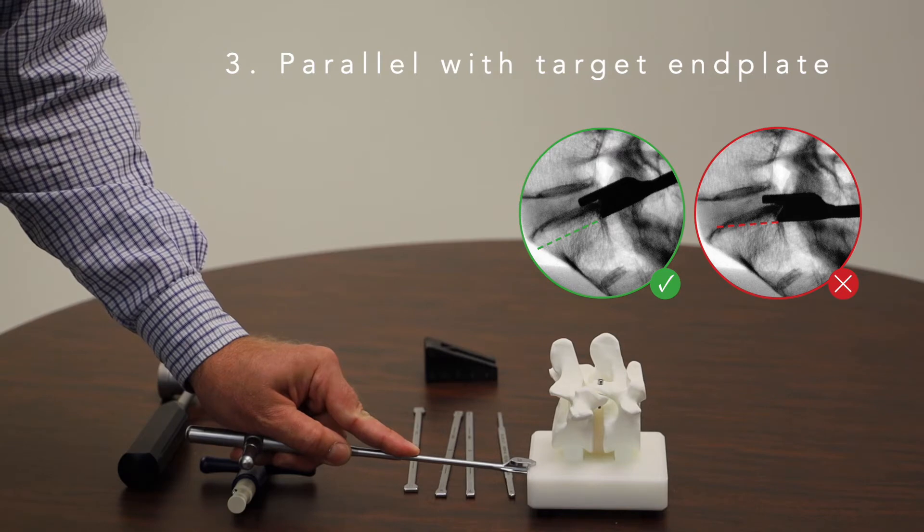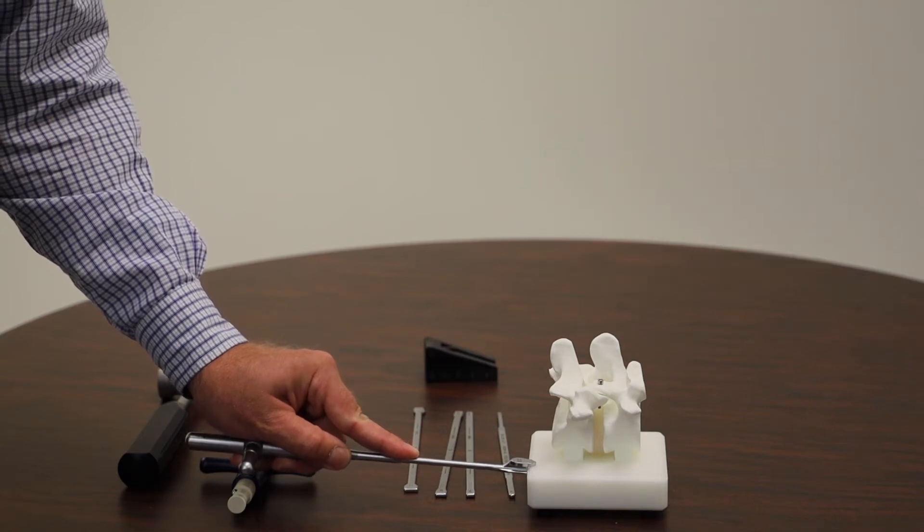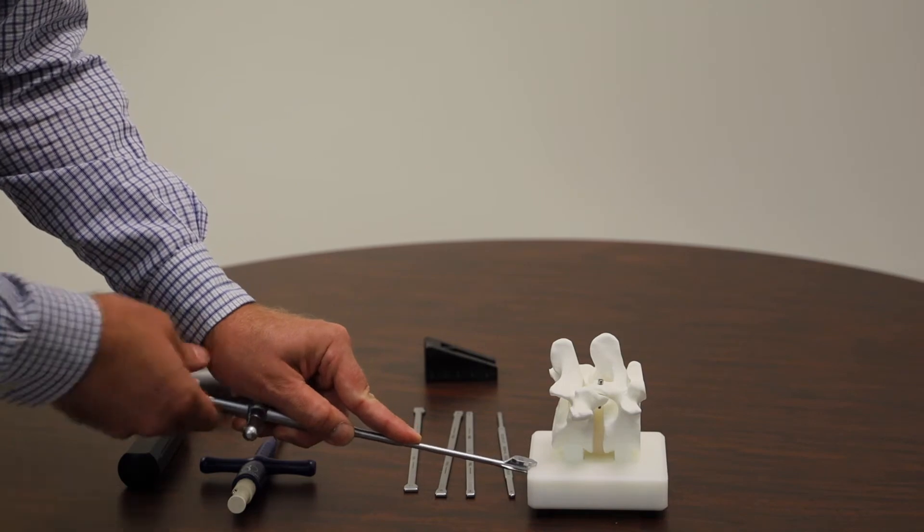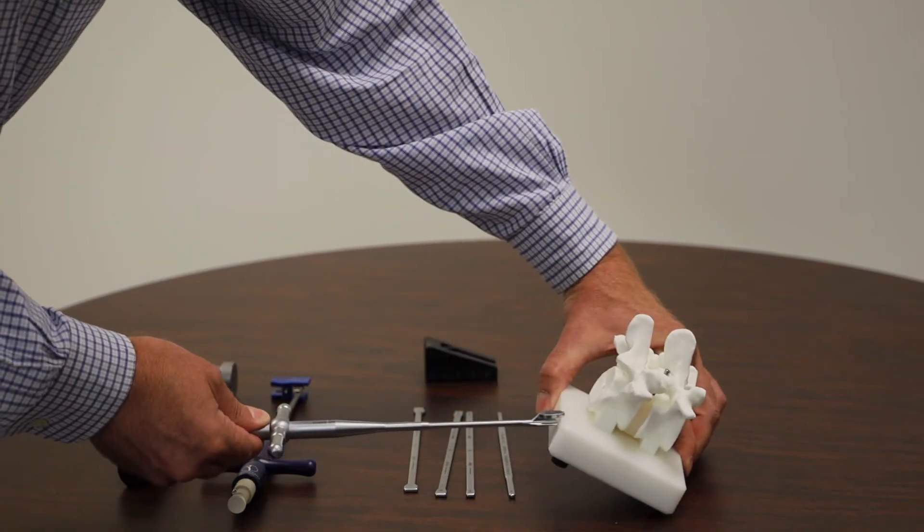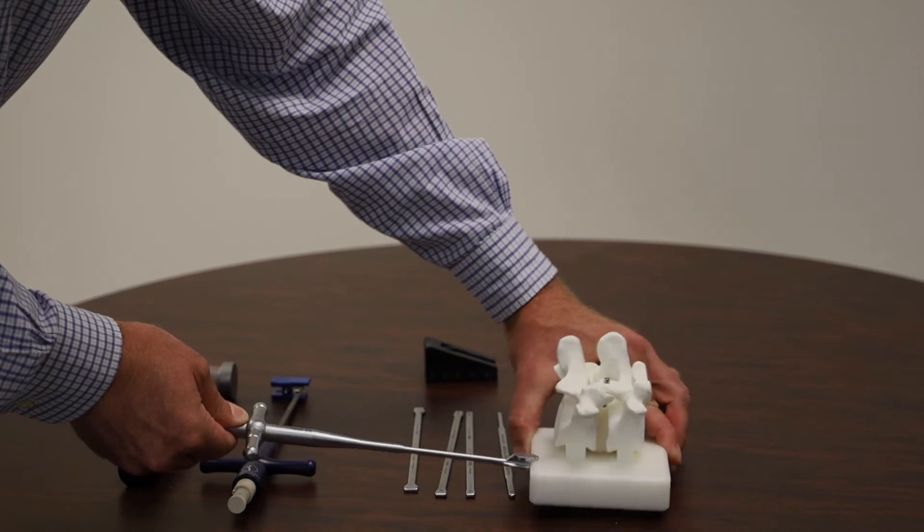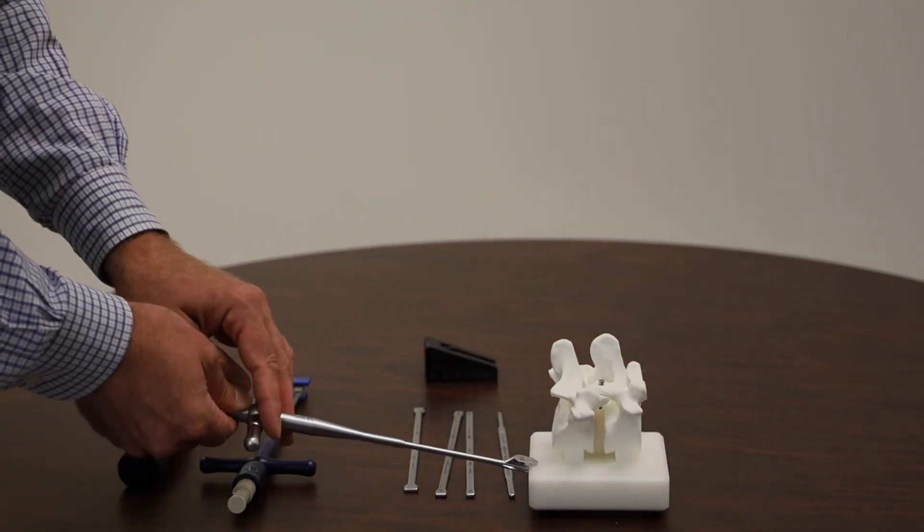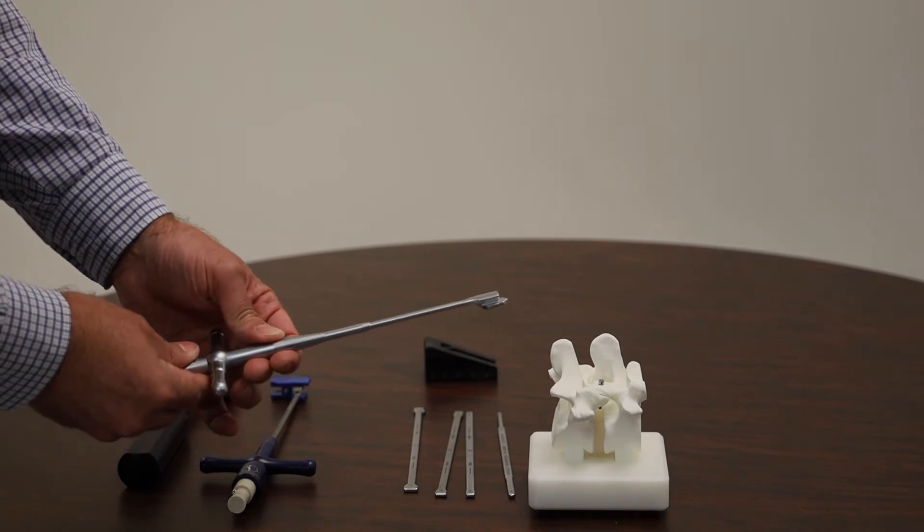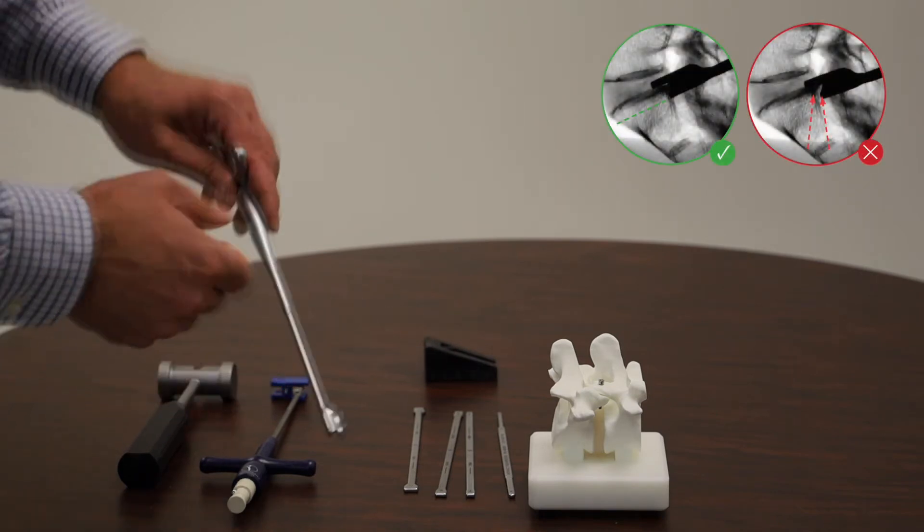So parallel with the end plate is fine. Angled into the target vertebra is fine. But angled at the target end plate is not okay. If you're unable to position the tool correctly, it's good to check the opposite vertebra. It may be easier to reach.